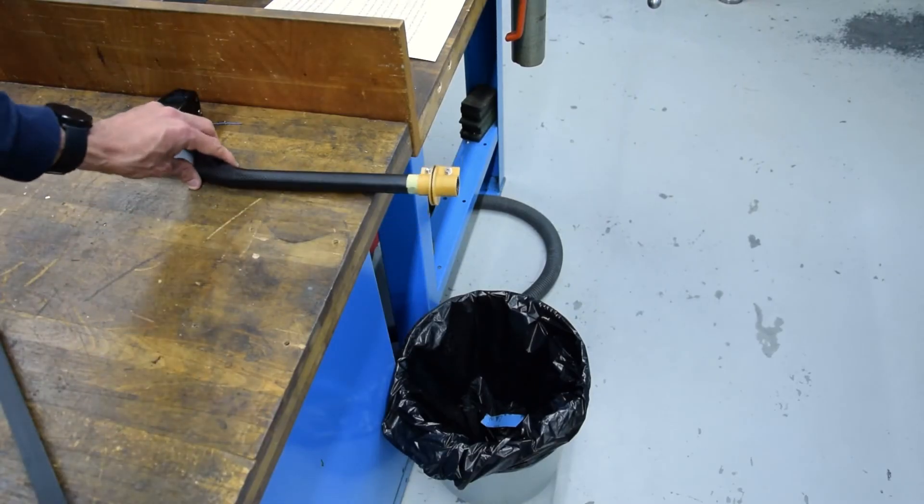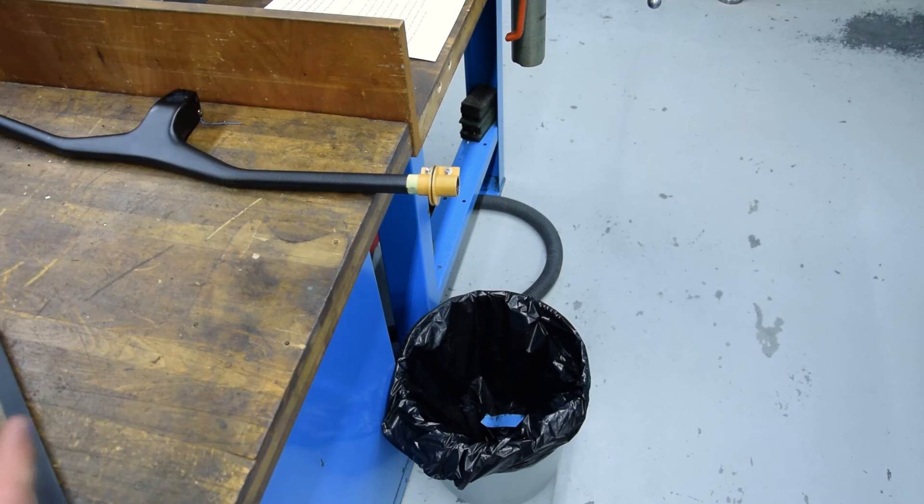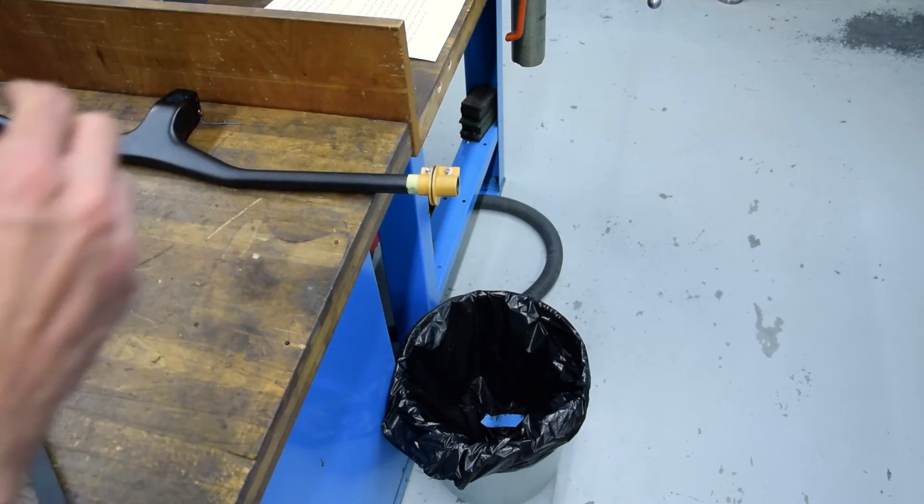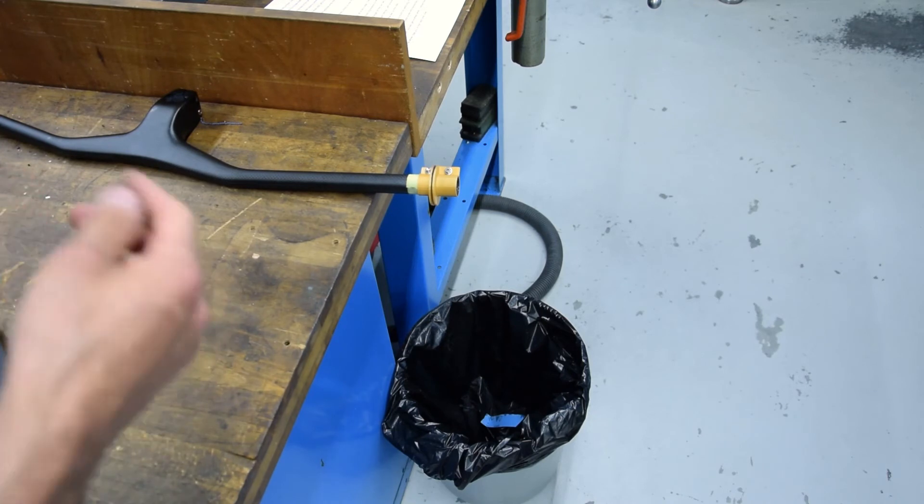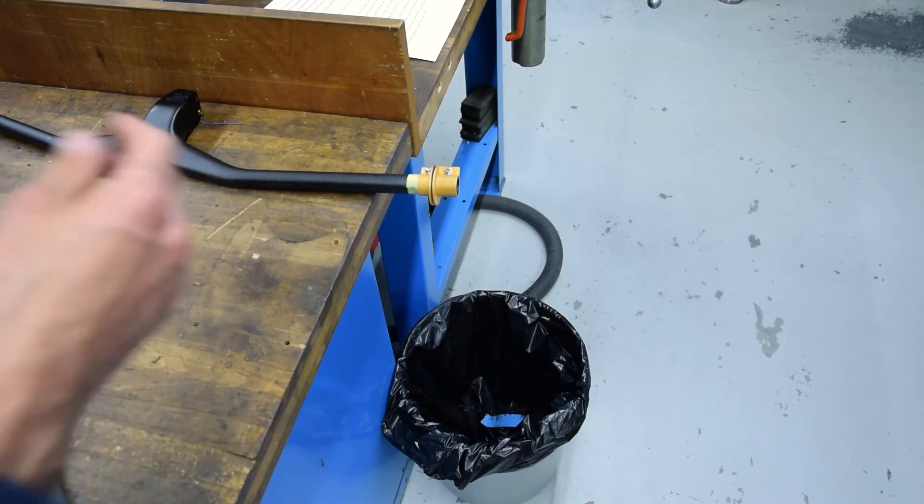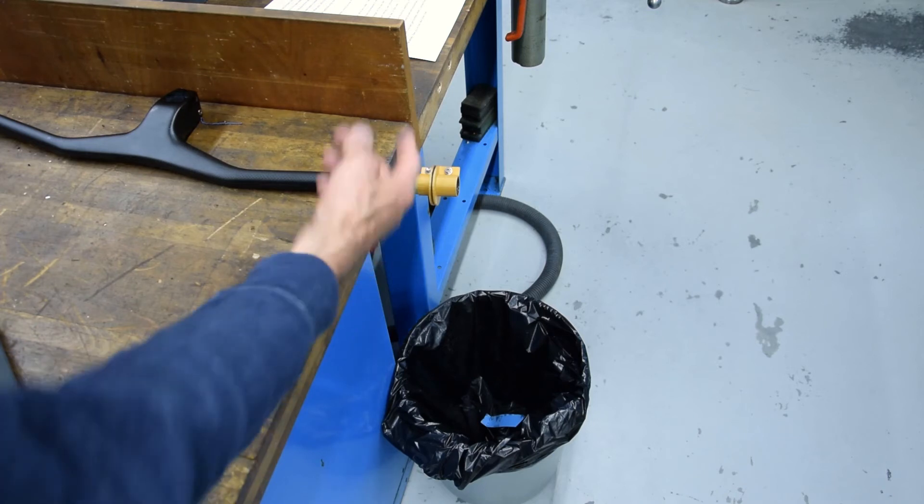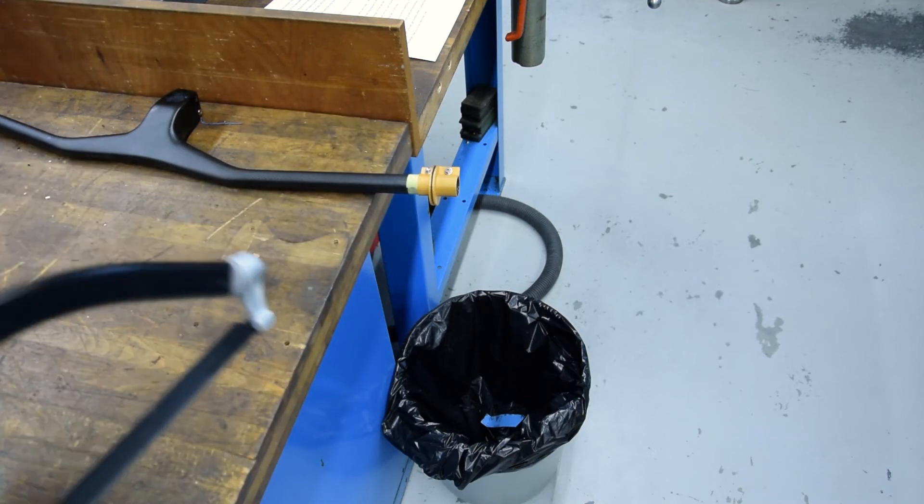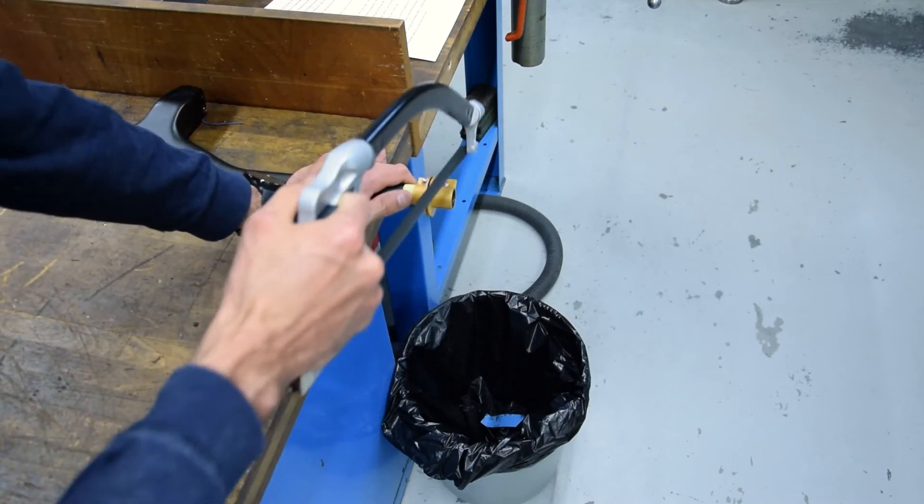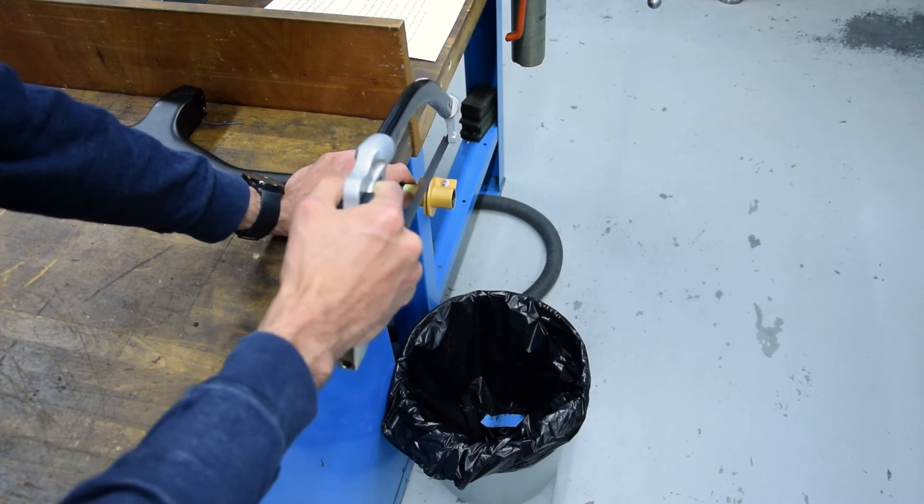So we repeat this procedure now for the left side. If you're interested in those cutting guides, I will share a link in the comments down below where you can download the CAD file of those 3D printed guides so you can also use them to cut your handlebars. So let's cut now the other side.